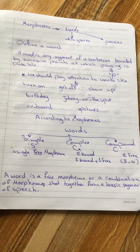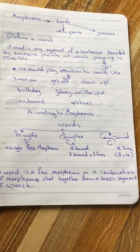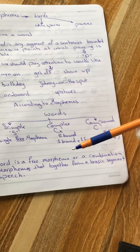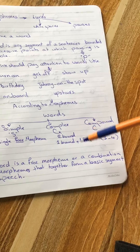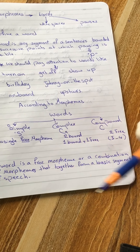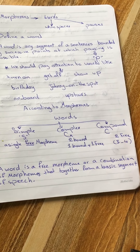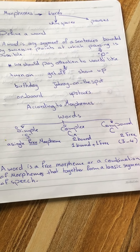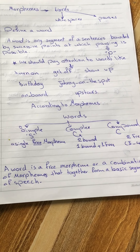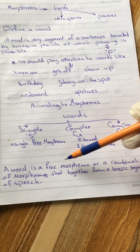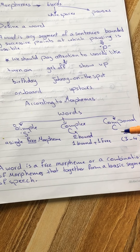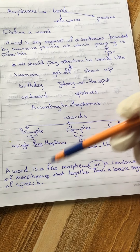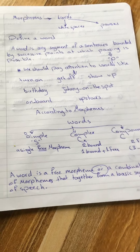Stagerberg also gives us another definition for words: a word is a free morpheme or a combination of morphemes. So we are defining words according to morphemes — a free morpheme or a combination of morphemes together.